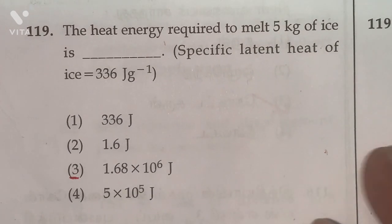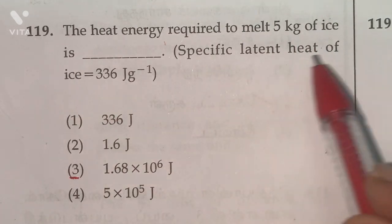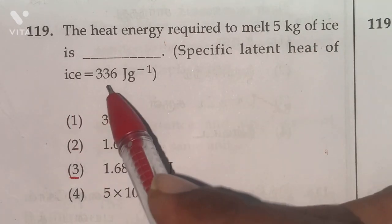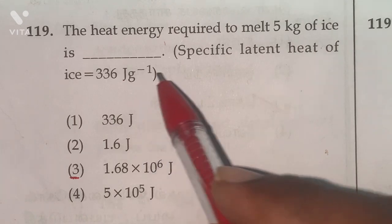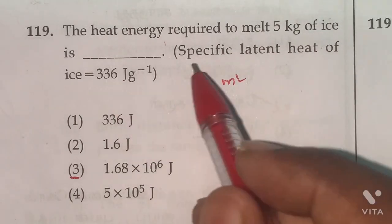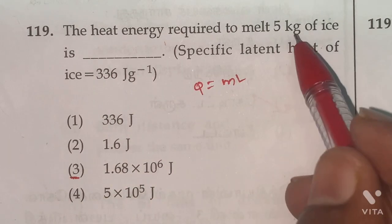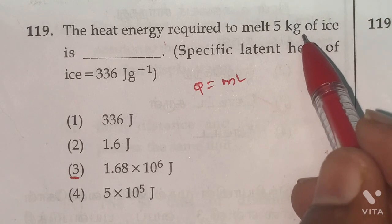119th. The heat energy required to melt 5 kg of ice is dash. Specific latent heat of ice 336 Joule gram inverse. Formula for this one Q equal to ml. Here specific latent heat given in gram, so this mass we have to convert into gram.